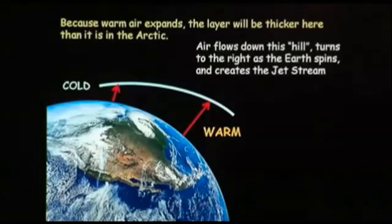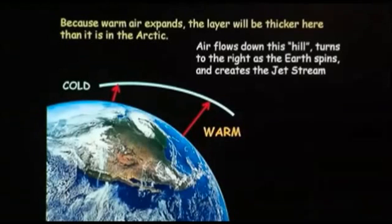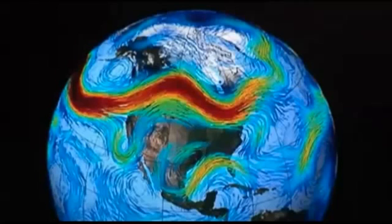What the air tends to do is flow downhill towards the Arctic. And because the Earth is spinning, the Coriolis force sends that moving air — which is trying to flow north — to the right, and we end up with the jet stream: this river of fast-moving air at high levels over our heads.